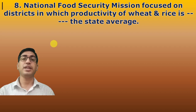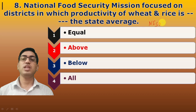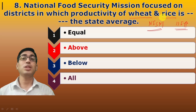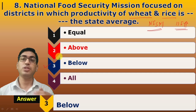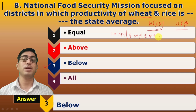Eighth question: National Food Security Mission (NFSM) focused on districts in which the productivity of wheat and rice is — what — compared to the state average? The NFSM was launched in the 11th Five-Year Plan for wheat, rice, and pulses. The answer is below average — districts with below-average productivity were targeted. The expected production level was 10 million tons for wheat, 8 million tons for rice, and 2 million tons for pulses — totaling 20 million tons.